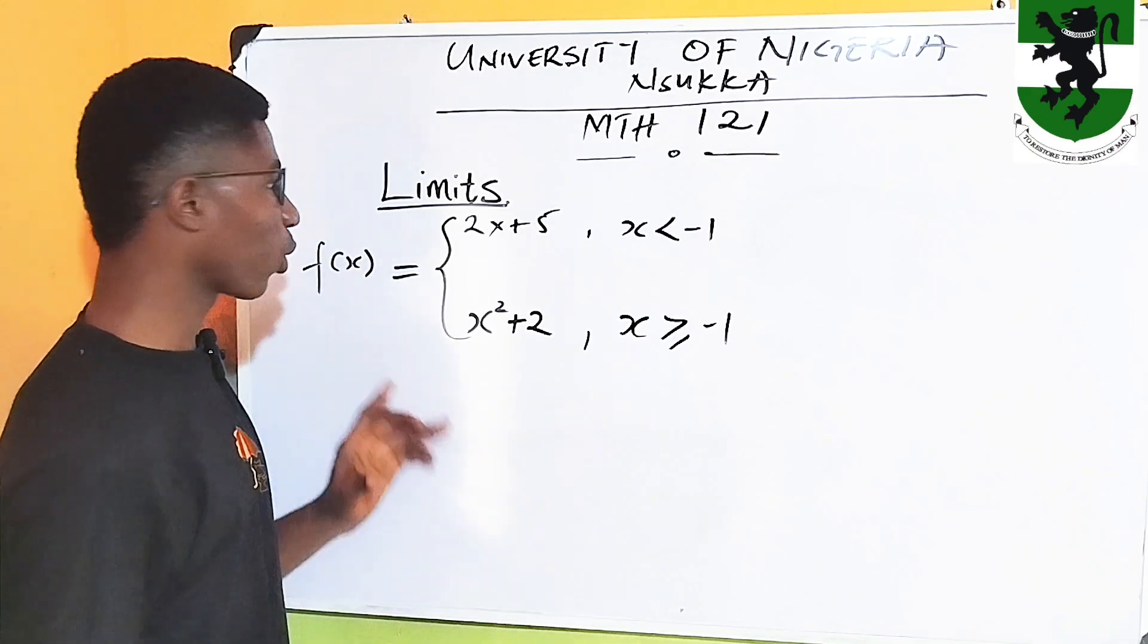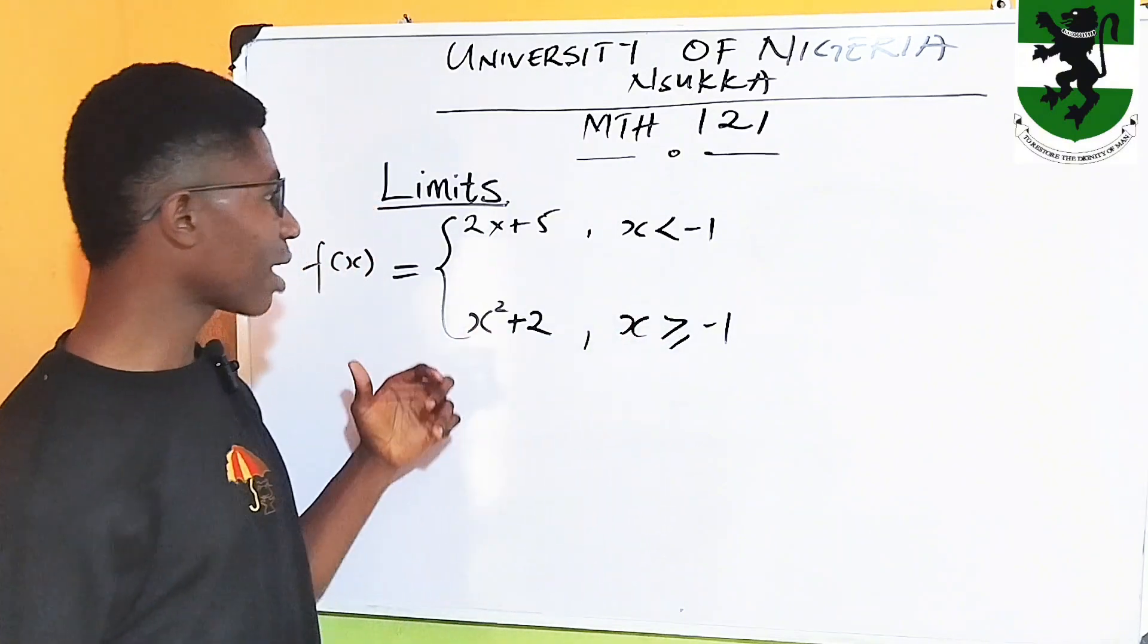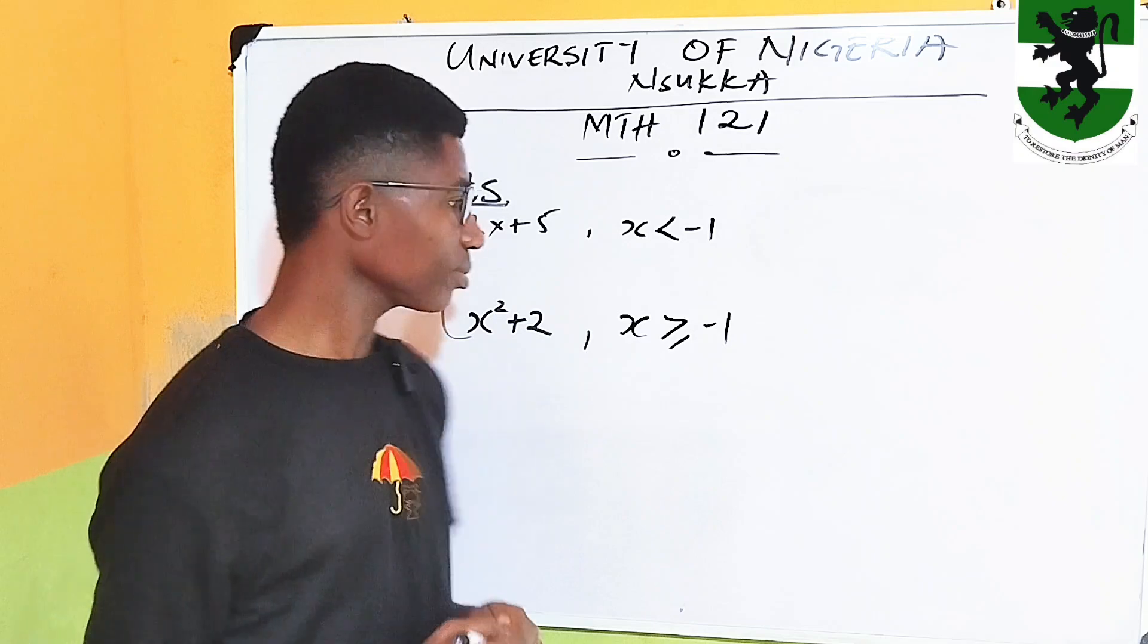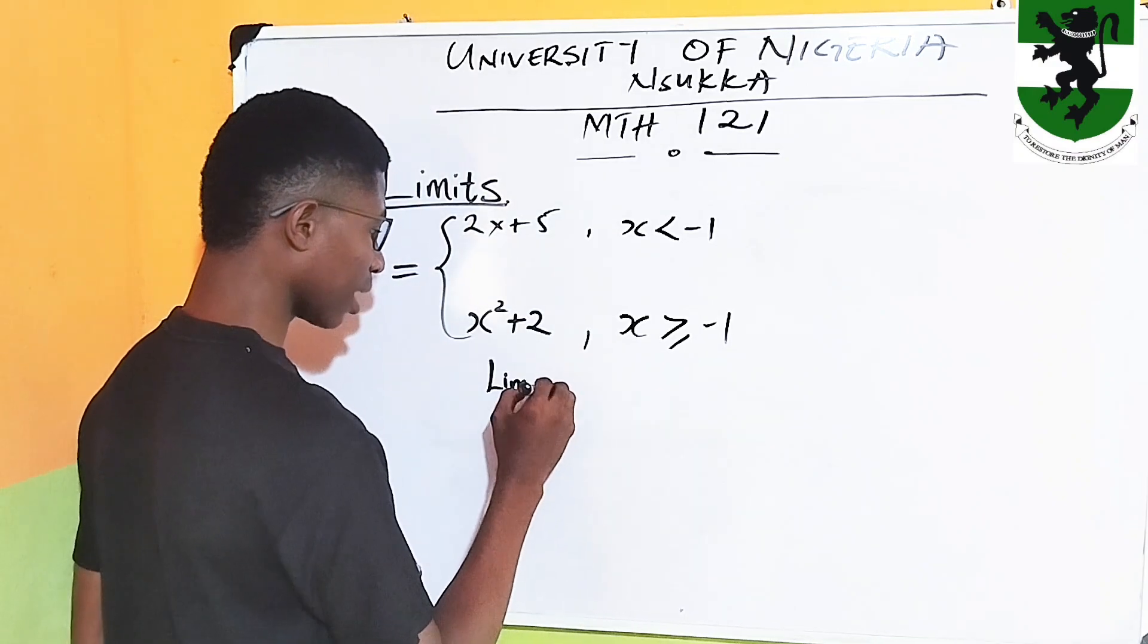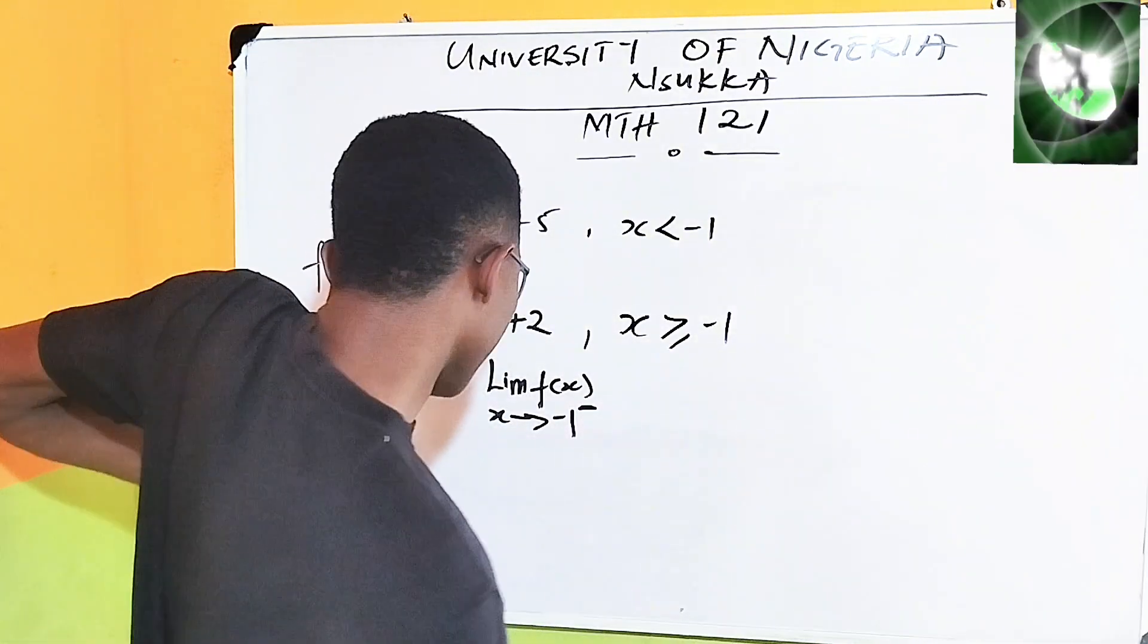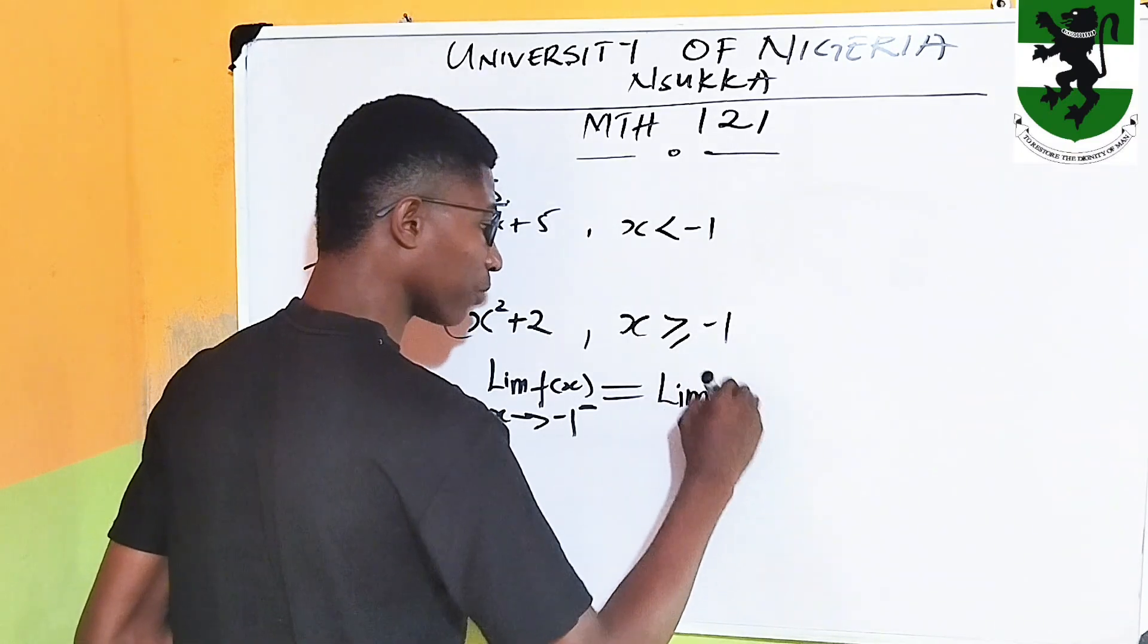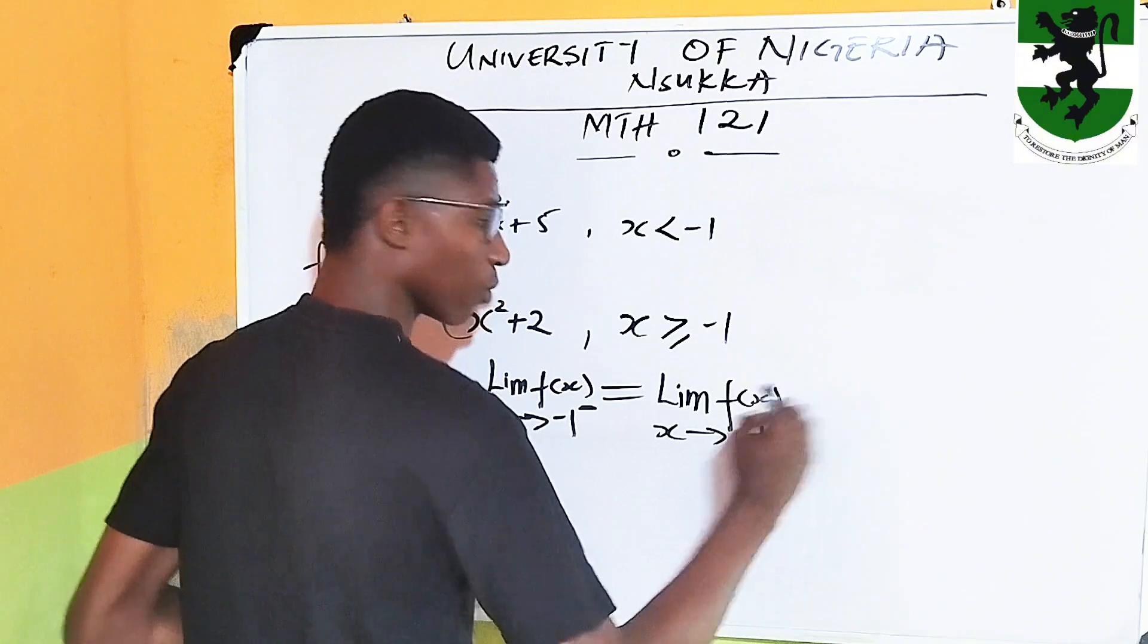A function is said to be continuous at a point if the left-hand limit and the right-hand limit exist and are equal. That is, the left-hand limit, limit of f of x as x approaches minus 1 from the left, the negative axis, must be equal to limit of the function as x approaches the point minus 1 from the right.